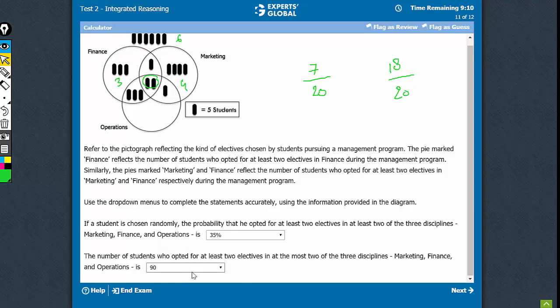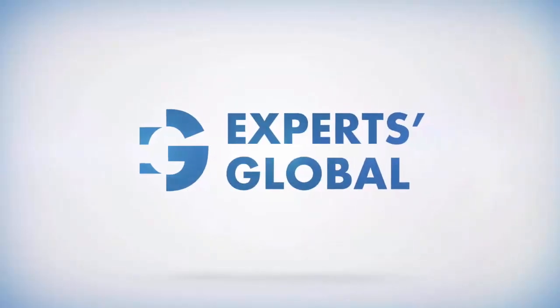Oh, sorry, but it's asking, it's not asking the probability, it's asking the absolute number of students. So 18 students, 18 bars and each bar represents 5 students. So 90. The right combination of answers is 35% and 90 students. Thank you.